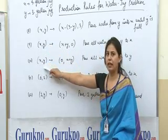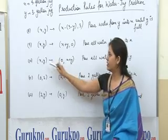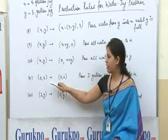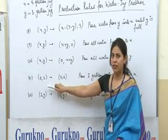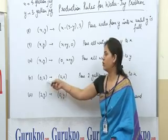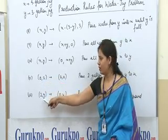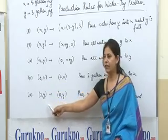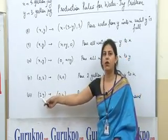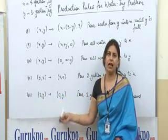The tenth rule states that we can convert XY into 0, X plus Y. This means we can pour all the water from the X jug into the Y jug. An additional rule states that we can convert the 0-2 status into 2-0, meaning we can pour all water from the Y jug into the X jug. Another rule states that 2Y can be converted into 0Y, meaning we can pour all the water from the X jug onto the ground and make it an empty jug.